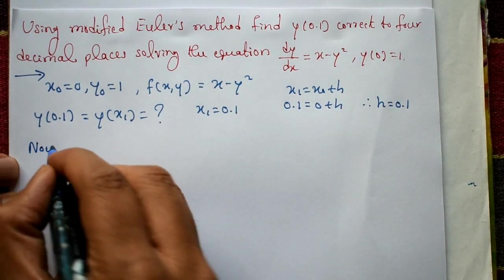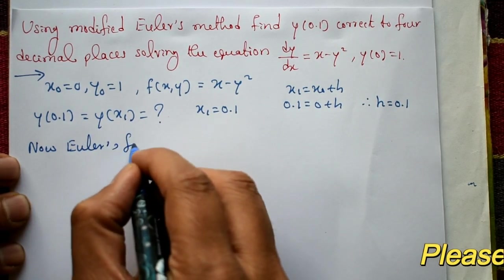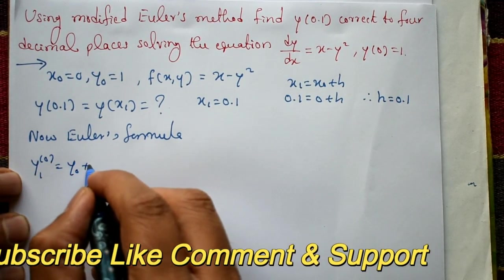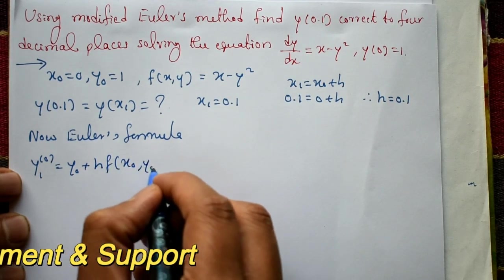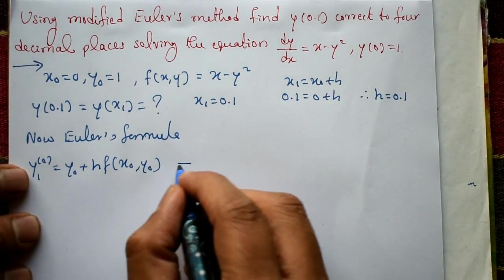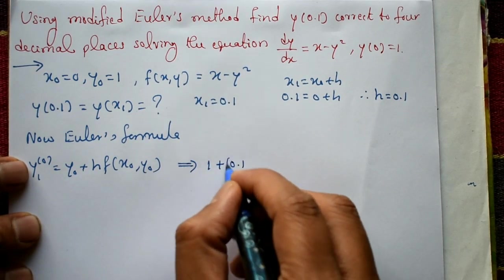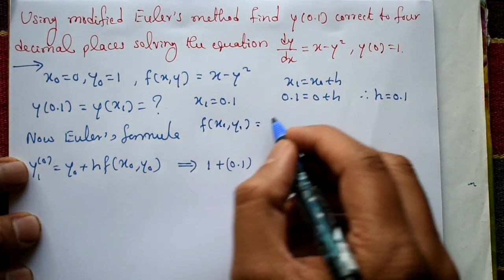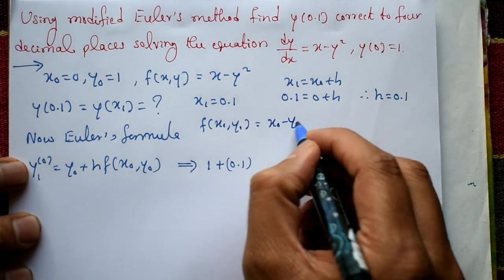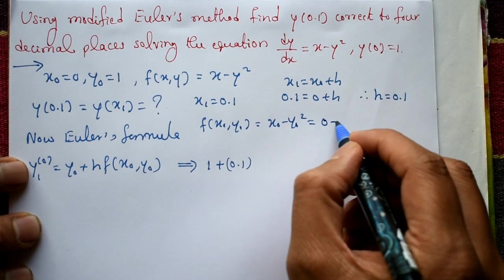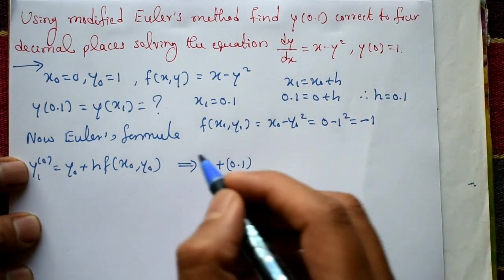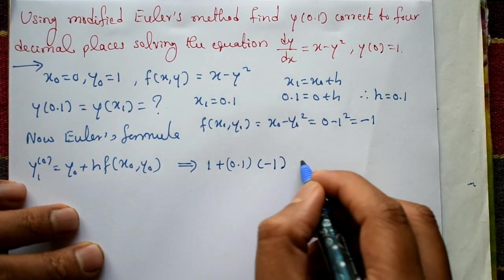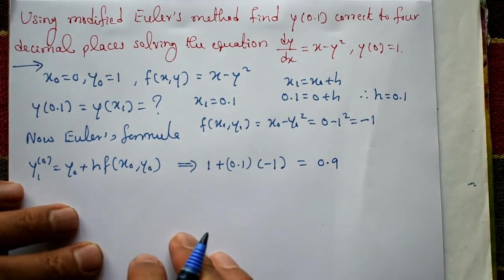Using Euler's predictor formula: y1⁰ = y₀ + h·f(x₀, y₀). Here y₀ = 1, h = 0.1, and f(x₀, y₀) = x₀ - y₀² = 0 - 1² = -1. Therefore y1⁰ = 1 + 0.1×(-1) = 0.9.